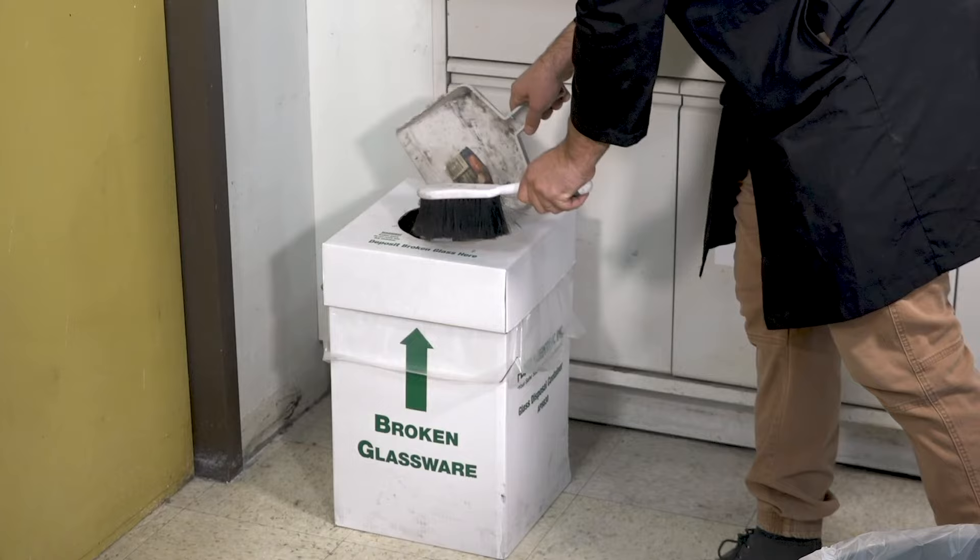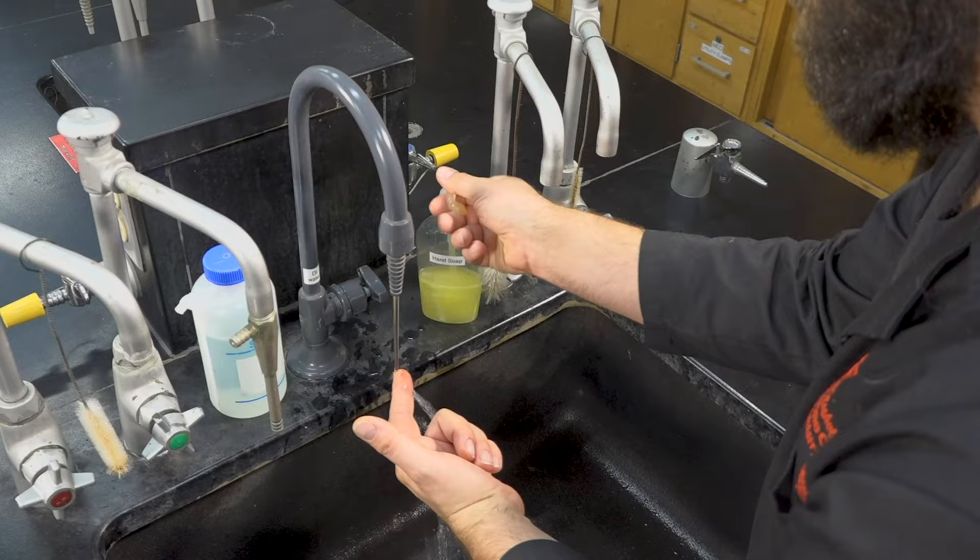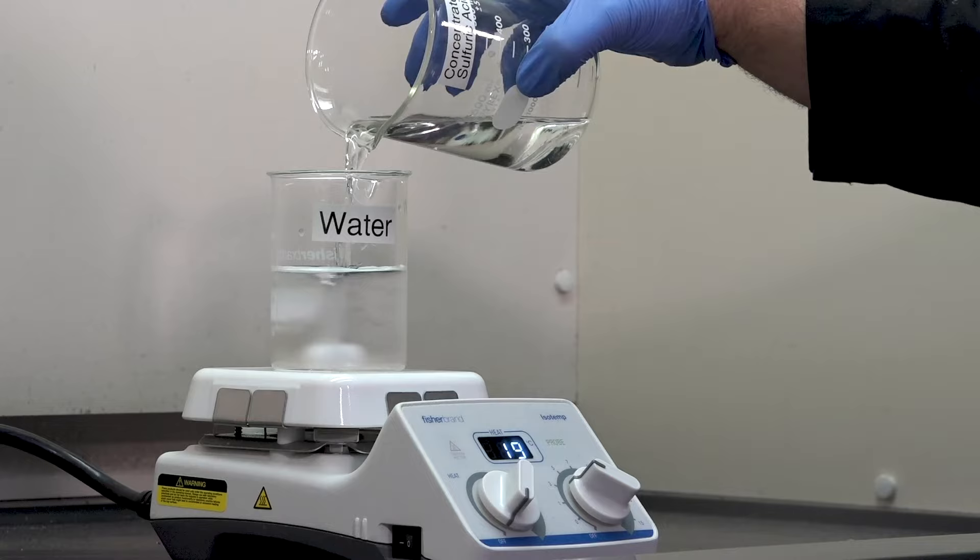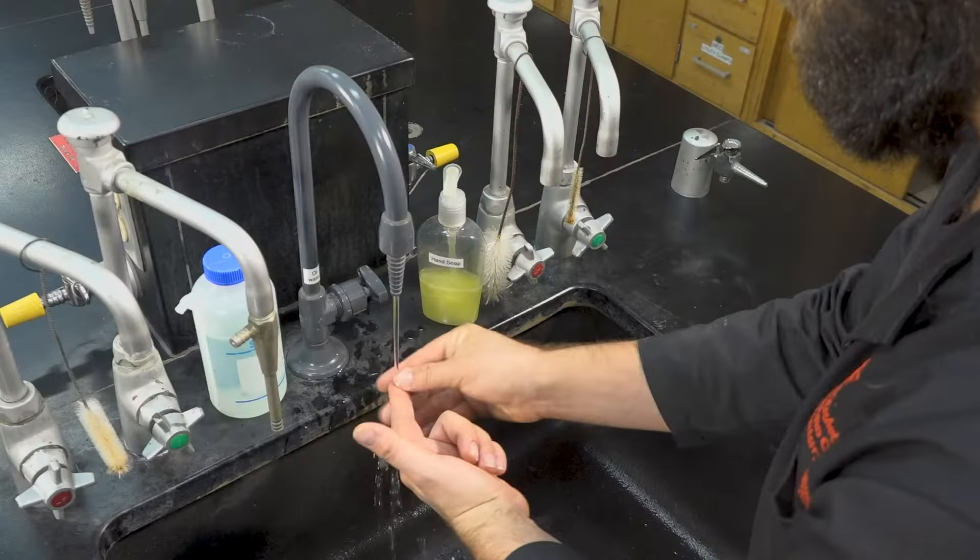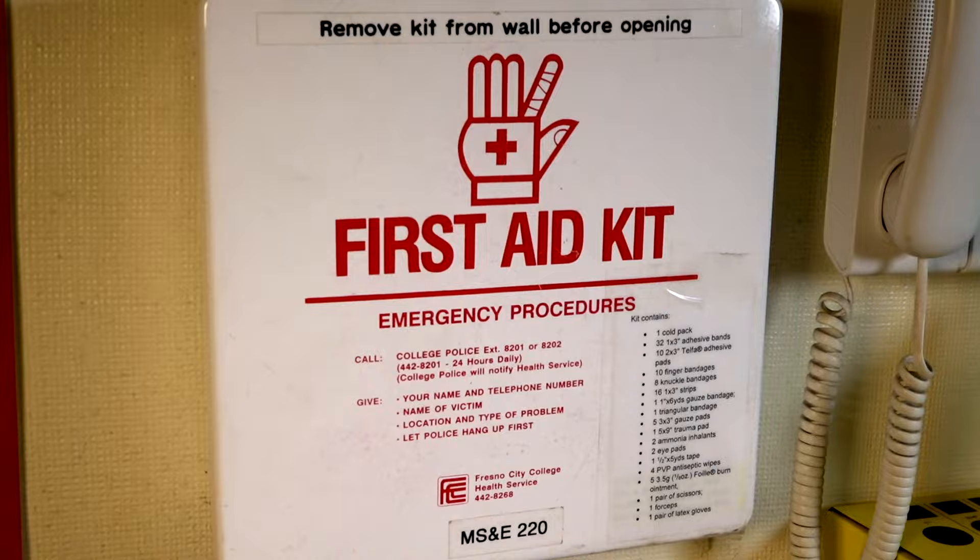In the event that you do cut yourself, it is important to clean the wound sufficiently. This is especially important as we are in a chemistry lab, and the glassware may be contaminated by dangerous chemicals. Rinse the area thoroughly with soap and water. Your instructor will provide you with a basic first aid kit containing bandages and antibiotic ointment.